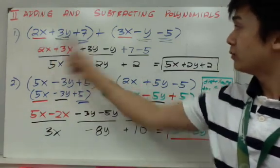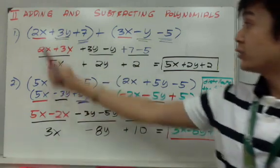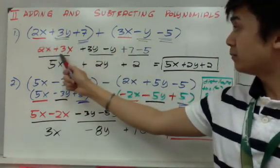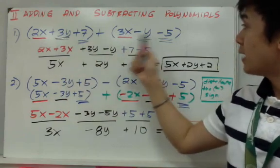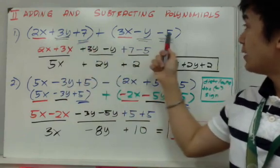So you have 2x and 3x, I have 3y minus y, and I have 7 minus 5. By combining like terms, 2 plus 3 is 5x, 3y minus y will give me positive 2y.